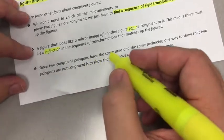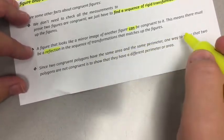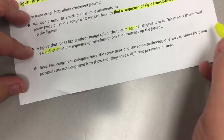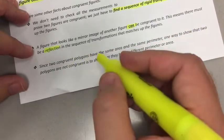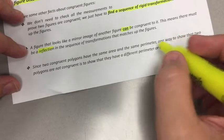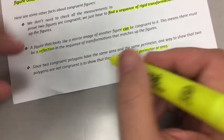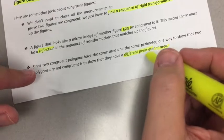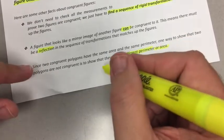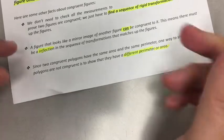Since two congruent polygons have the same area and same perimeter, one way to show that two polygons are not congruent is to show they have different perimeter or areas. If you can show me these two figures have a different perimeter or have a different area than each other, then we can say they're not congruent. That's a way to say they're not congruent.